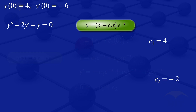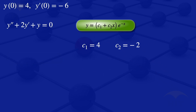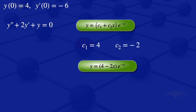Now that we have c1 equals 4 and c2 equals minus 2, substituting into our general solution gives y equals (4 minus 2x)·e^(-x). This is the solution to the differential equation subject to the given initial conditions.